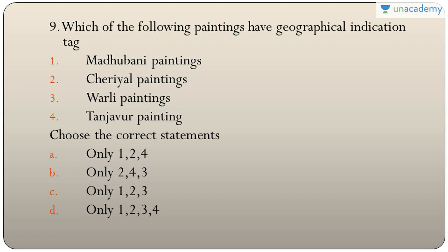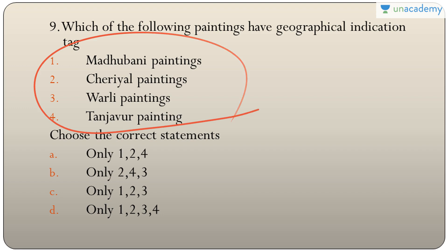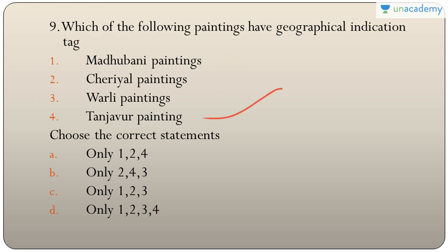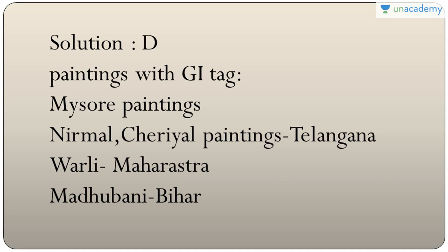Question nine: which of the following paintings have the Geographical Indication tag — Madhubhani, Cheryal, Warli, and Tanjore paintings? All four have been given the GI tag, so the answer is D — only one, two, three, and four. Additionally, Mysore paintings also have a GI tag. Nirmal and Cheryal belong to Telangana, Warli to Maharashtra, and Madhubhani to Bihar.